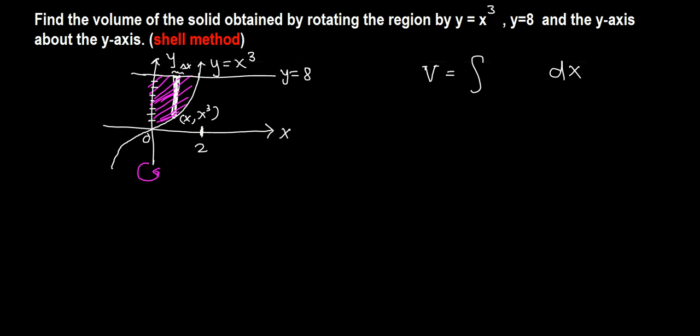This small rectangle could be taken anywhere between 0 and 2, and when we rotate this about the y-axis, we're gonna get the outside of the cylinder, that's the shell.